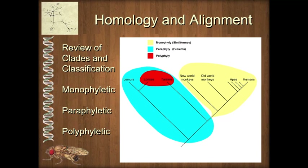First, I just want to review topics we talked about in our last discussion. When we are classifying organisms, we want to make sure we do it by clades. A clade is a group of descendants that come from a common ancestor without leaving any of the descendants out. That is a valid clade. The only clades that are valid are monophyletic. In the yellow group highlighted here, we've got a common ancestor and haven't left out any of the descendants.